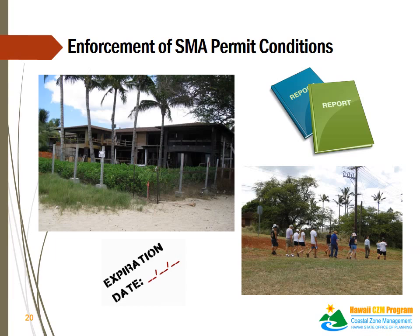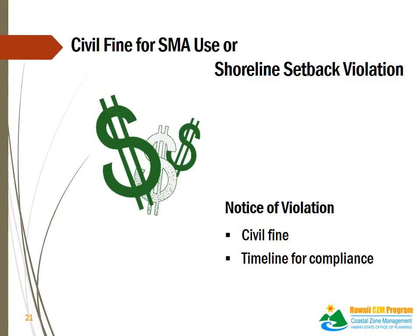Specific measures are necessary to enforce the SMA permit conditions such as: periodic status reports from applicants as an ongoing condition, time limits to the granted SMA permit with additional approval required for time extension, additional review and approval for modifications to the original proposal or plans, cross review of other permit or approval applications under the county planning departments, responses to complaints by the public or by affected parties, site visits and inspections, and civil fines and/or revocation of the SMA permit for failure to comply with the SMA use requirements. Pursuant to the Hawaii CZM law, a civil fine for SMA use or a shoreline setback violation can be up to $100,000 and a civil fine of up to $10,000 for each day in which such violation persists.